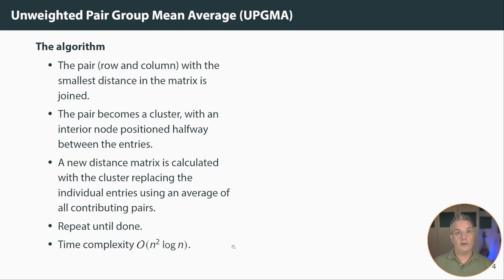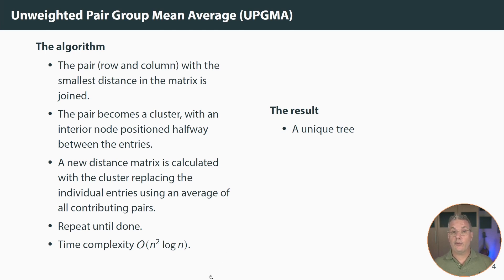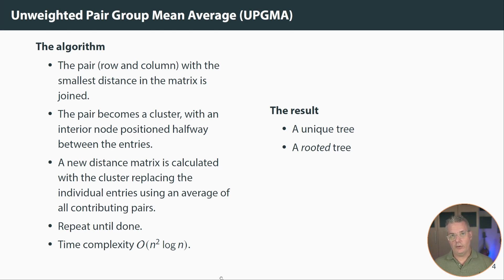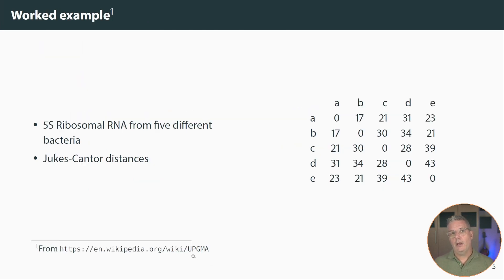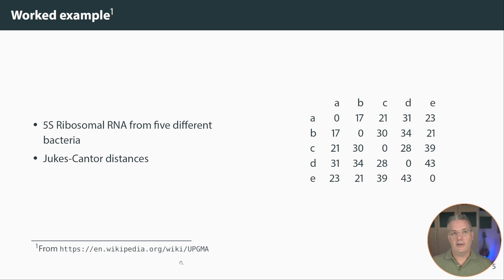What are the results of this algorithm? We get a unique tree — the algorithm gives us one tree that satisfies the ultrametric inequality. It's also rooted, so the result is a unique, rooted, ultrametric tree. The consequence of that is that all of the tips — the leaves — will be equidistant from the root.